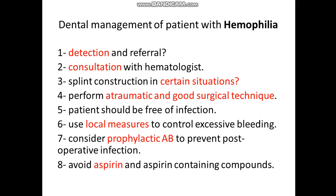Use local measures to control excessive bleeding. Local measures include pressure packs using cotton or gauze, use of Surgicel or Oxycel, collagen fibrils, or gel foam — all of which induce blood clot formation. Thrombin can also be used. Additionally, consider prophylactic antibiotics to prevent post-operative infection, since inflammation and hyperemia may exaggerate the condition.